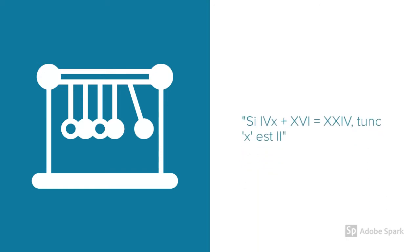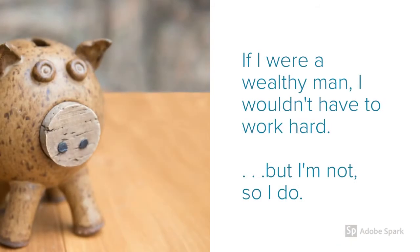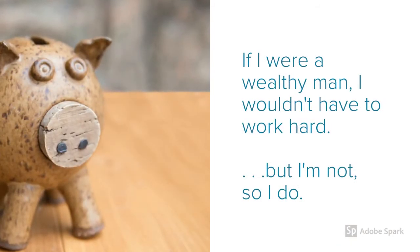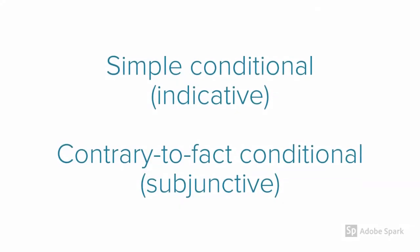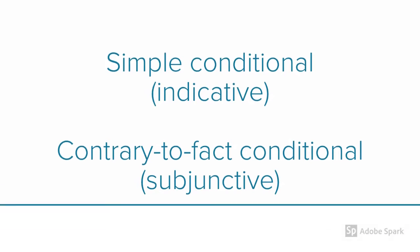Although a Roman might say it like that. But if I were a wealthy man, I wouldn't have to work hard. You see, this isn't the case — if I were a wealthy man, but I'm not, so I do. So the first examples I showed you were simple conditionals, and they took an indicative. The latter example was contrary-to-fact conditional, which takes a subjunctive.